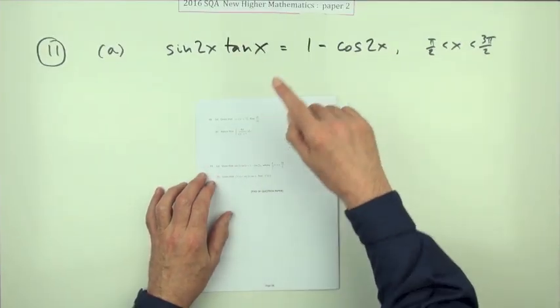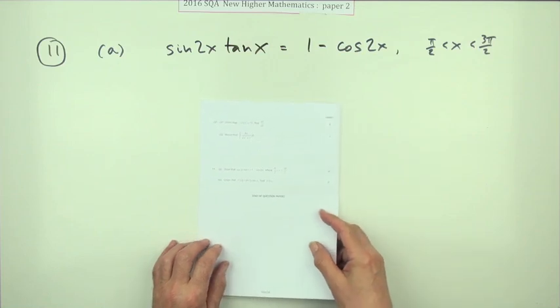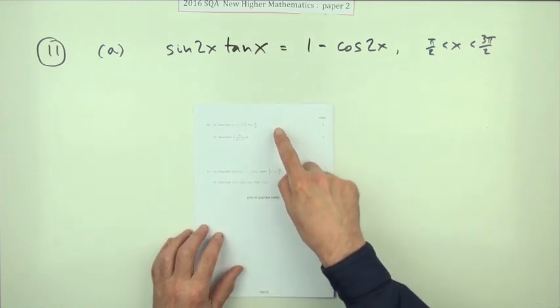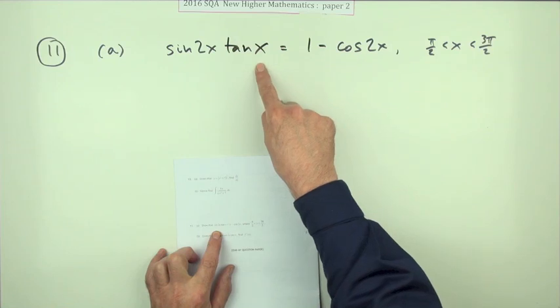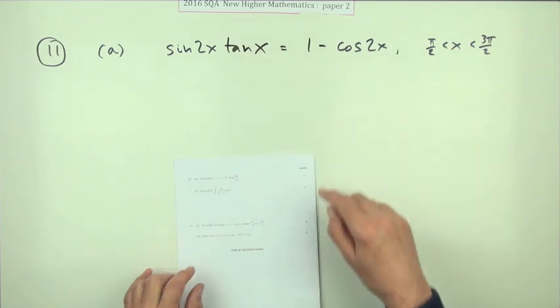And number 11, the last question in paper 2 of the 2016 new hire. Similar sort of an idea to question 10. Here the first part: show that this expression on the left is the same as the expression on the right for four marks with this little strange interval here.